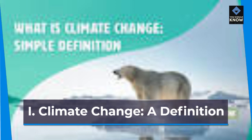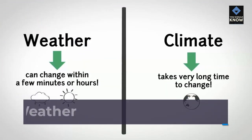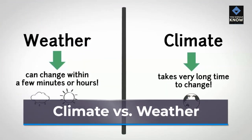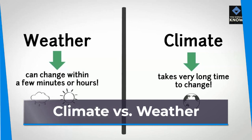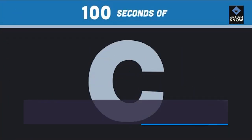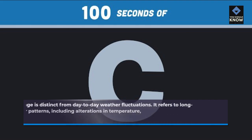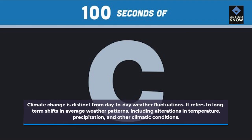Climate change — a definition. Climate change is distinct from day-to-day weather fluctuations. It refers to long-term shifts in average weather patterns, including alterations in temperature, precipitation, and other climatic conditions.